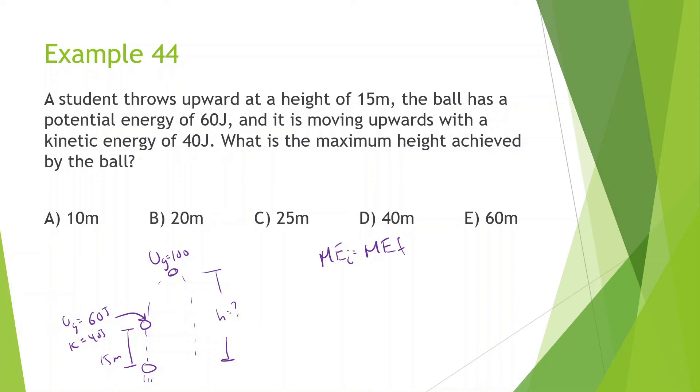At the very beginning, we have 60 joules of potential energy and 40 joules of kinetic energy at this point right here. And then at the very end, all of that is going to turn into the mass times gravity, 10 times the height. So we're looking for what this height is going to be. Before that, I should find what the mass is. So UG is equal to 60, which is equal to the mass, which we're looking for, gravity 10, and the height, which is 15. So the mass is going to equal 60 divided by 150, which is 0.4 kilograms. So then it's going to be 100 is equal to 0.4, gravity 10, and then H is what we're looking for. 100 divided by 4 is equal to 25 meters.